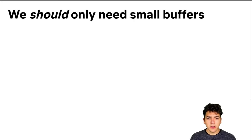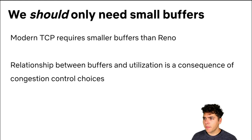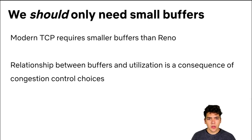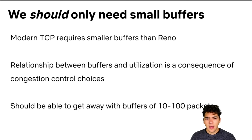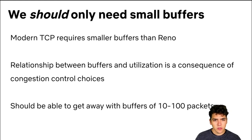To conclude, we should only really need small buffers in networks. Our results show that modern TCP algorithms require much smaller buffers than TCP Reno — fractions of the Reno size. Our paper also shows that the relationship between buffers and utilization is a consequence of choices made in congestion control. By making better choices with congestion control, we should be able to make buffers smaller, and as a long-term goal we believe we should get away with buffers of between 10 and 100 packets.